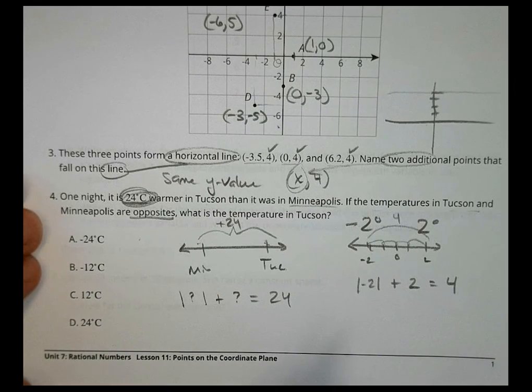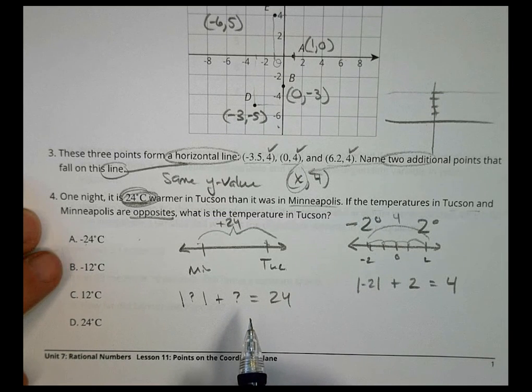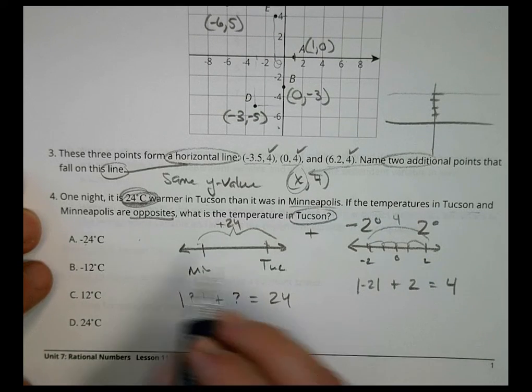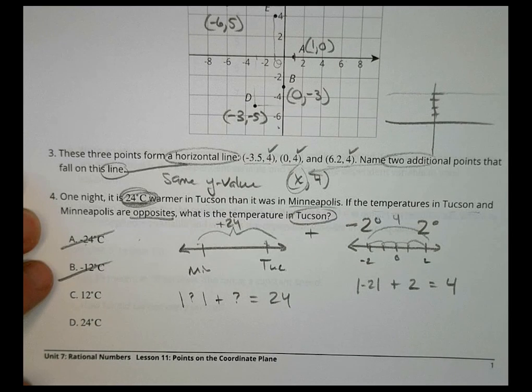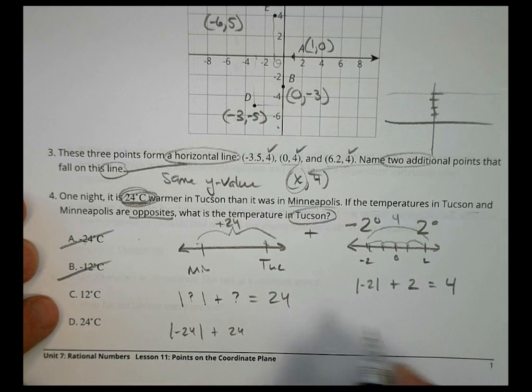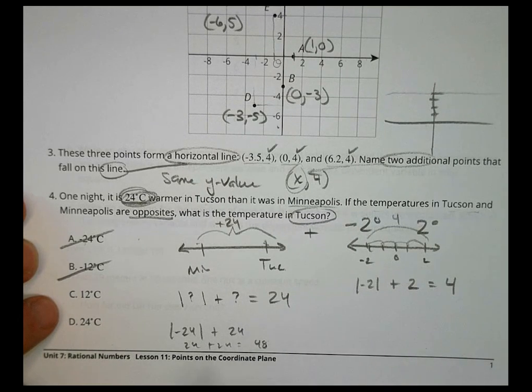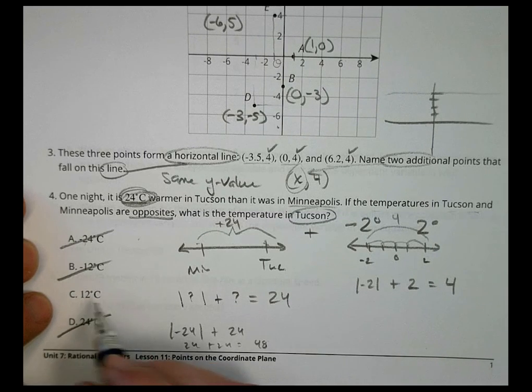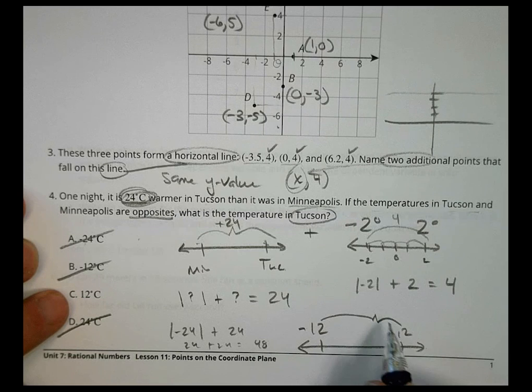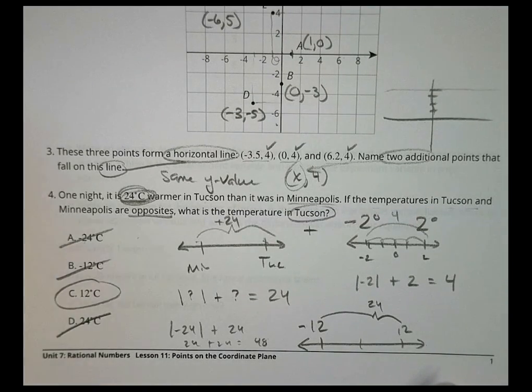So if you put negative 24 there, would you say that's going to work? No, that's not going to work, and the reason for that is we're looking at the temperature in Tucson. Tucson's going to be warmer. It needs to be positive for us to work out. So I'm looking at 12 and 24. If I had the opposite, negative 24 plus 24, that's going to be 24 plus 24, which equals 48. That's not 24 degrees warmer. That's 48 degrees warmer and not 24 degrees warmer. That's too much. If I use 12, if I'm at negative 12 on a number line compared to positive 12 over here, the difference from here to here is going to be 24 degrees more, and those indeed are opposite numbers. So that one makes the most sense for number 4.